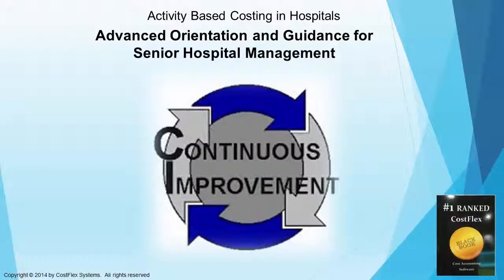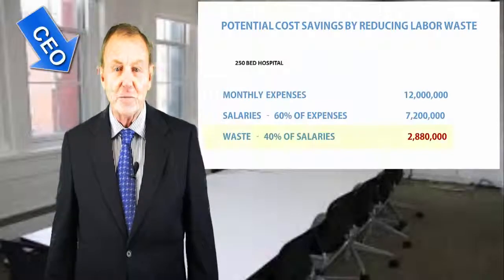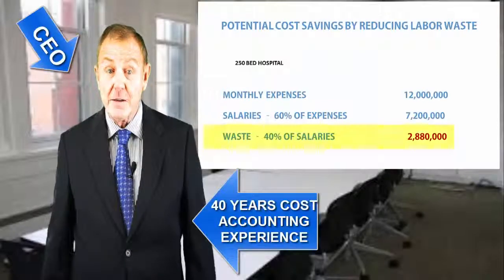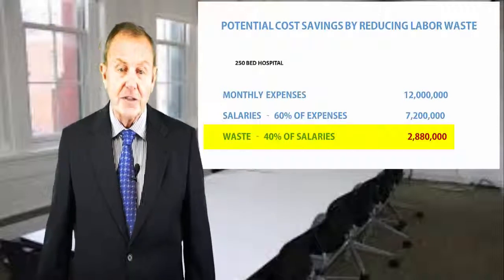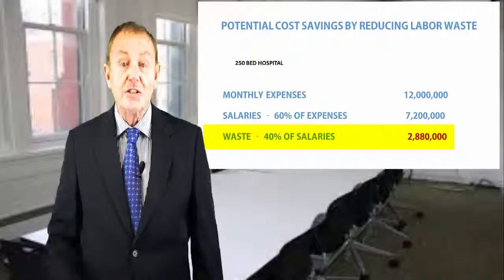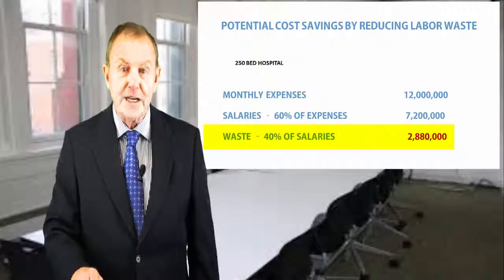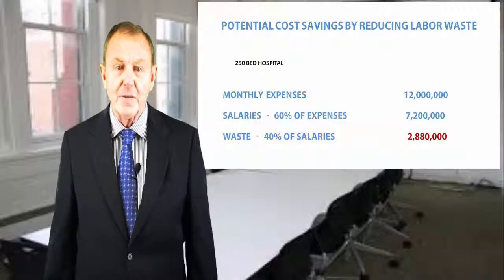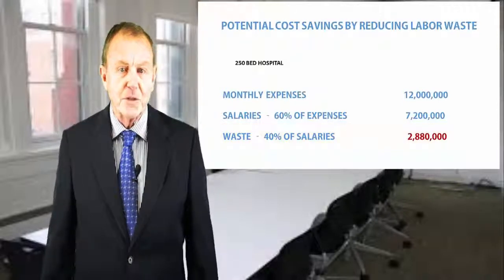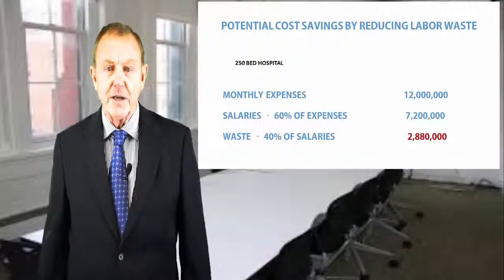This two-minute video will show how to use activity-based costing to reduce labor costs by up to 40%. We've often been asked what benefits activity-based costing provides compared to other costing methods. My answer to that question is a question: would you like to have a cost accounting system that is designed from the ground up to help save up to 40% of your clinical labor costs?